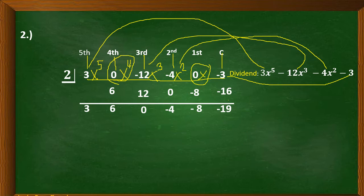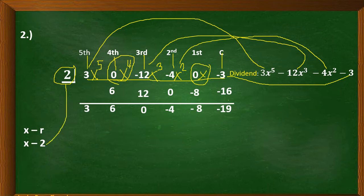For our divisor, we follow the formula x minus r and substitute r. This time, our r is equal to 2, so our divisor is x minus 2.